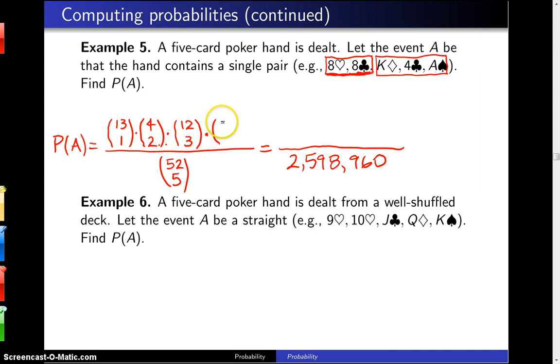And then finally, we have to choose a suit for each one of those. So out of the four suits, we choose one, but we do that three times, so I'll just put a little cubed up there. When you multiply that out, you get 1,098,240.